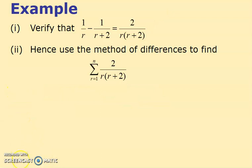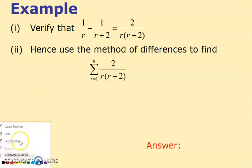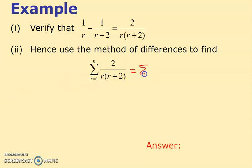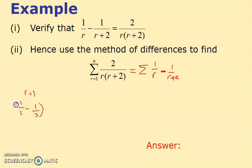Using this result again, we need to find the sum of 2/r(r+2). Because of the identity we found, this is really equal to 1/r minus 1/(r+2). Notice how we've introduced the minus — that's always the key factor: you have an expression without a minus, and you rewrite it with a minus involved. When r equals 1 we get 1/1 minus 1/3.